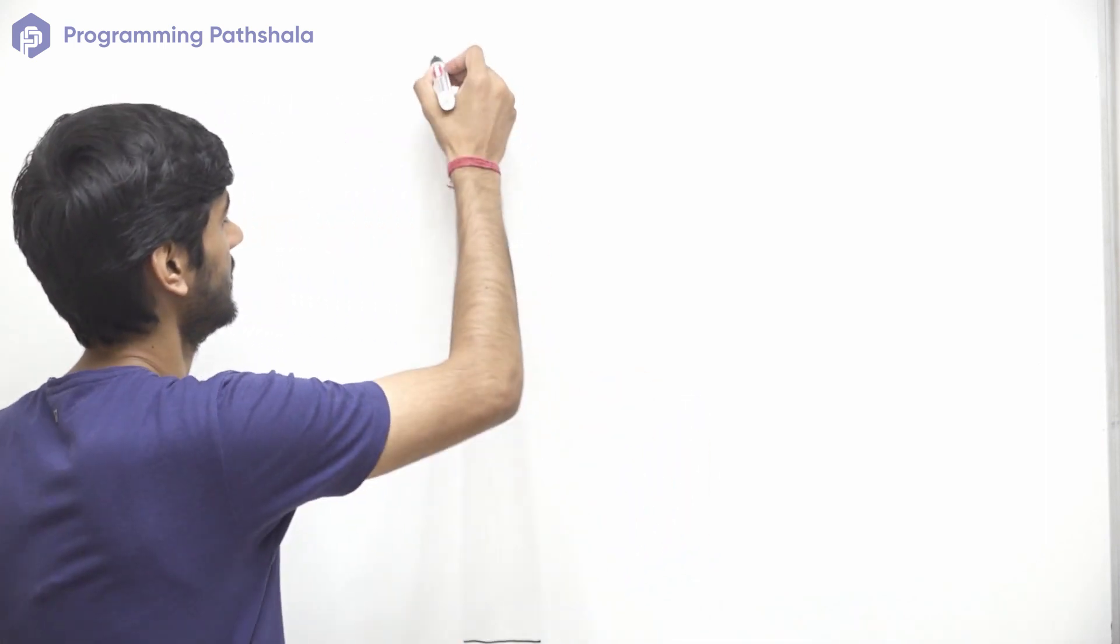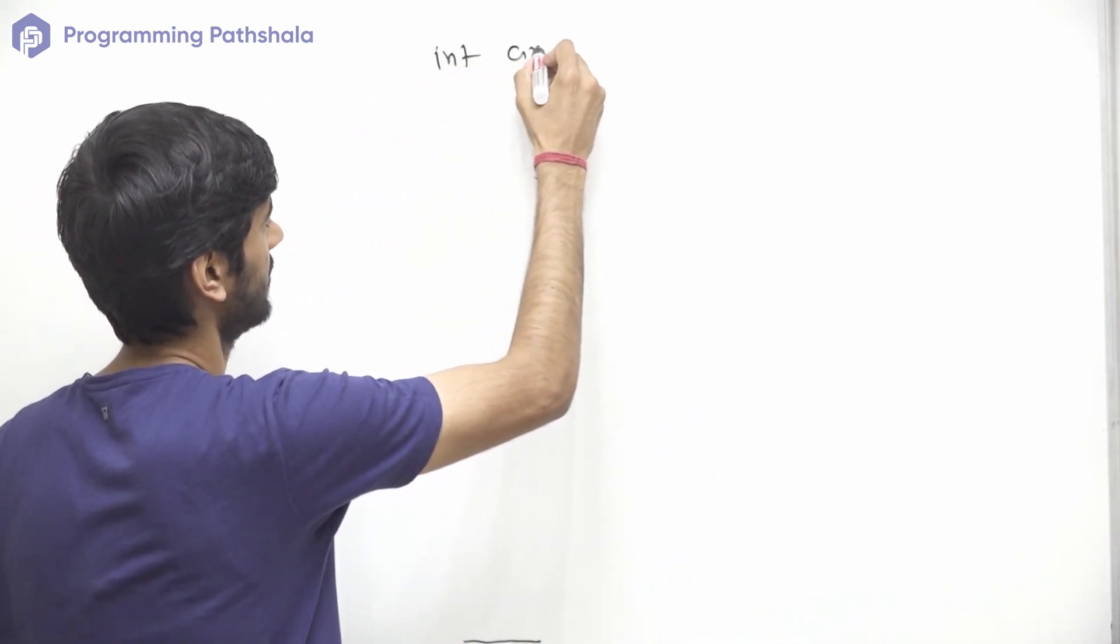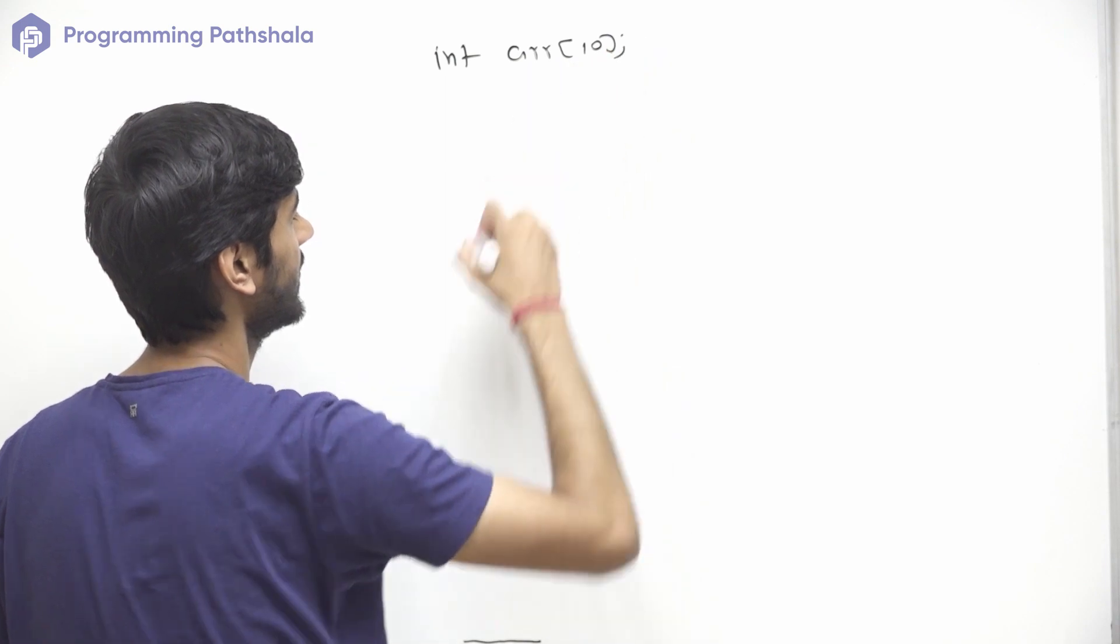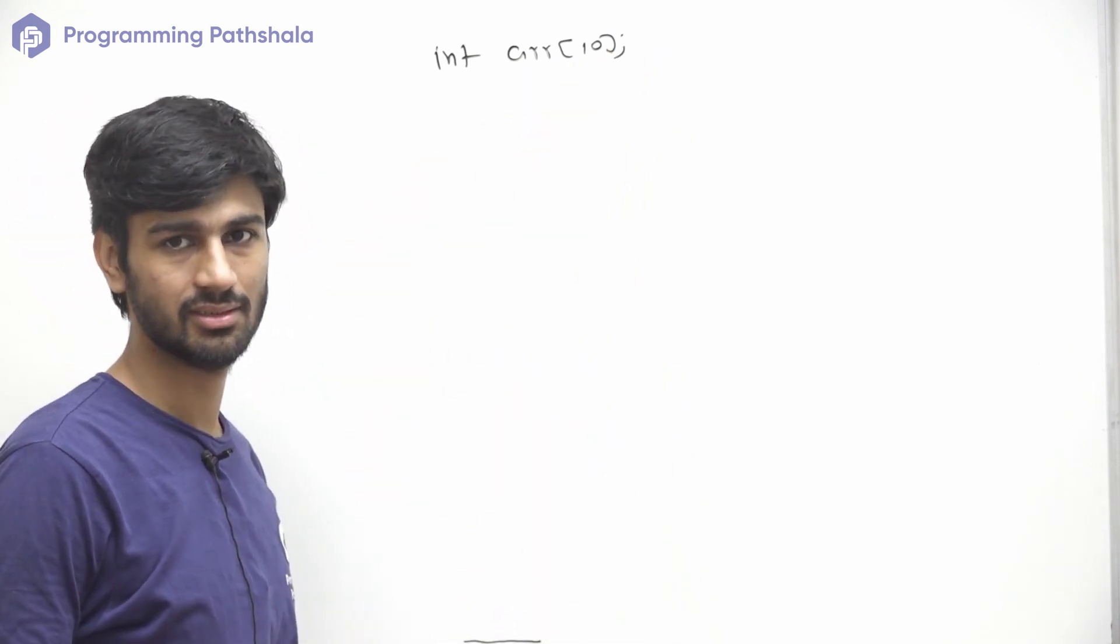Whenever we declare an array, we provide a size. So let's take an example. Let's say we have this array. So this array can store 10 integers.